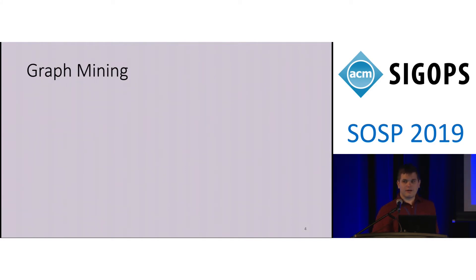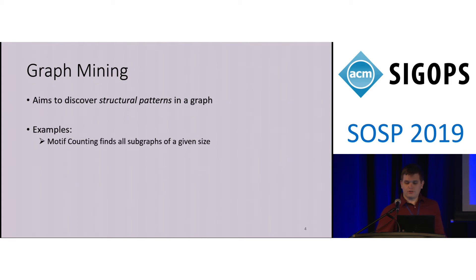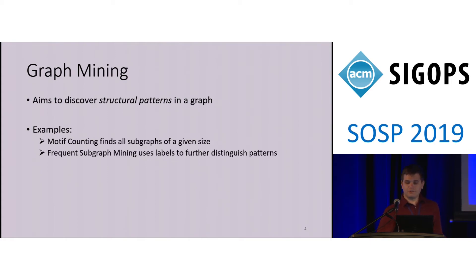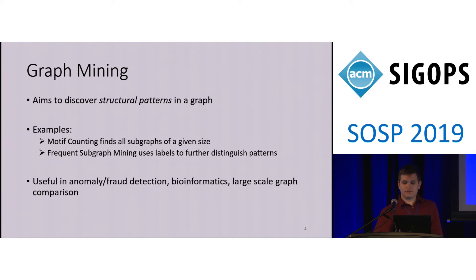So let's talk about graph mining specifically. Unlike graph traversals, graph mining searches for structural patterns within graph data sets. Two of the most common expressions of this problem are motif counting, which finds all patterns of a particular size, and frequent subgraph mining, which takes it a step further and separates otherwise identical patterns according to labels on their vertices or edges. Graph mining finds uses in activity networks for anomaly and fraud detection, protein interaction networks for bioinformatics, and as a fingerprinting tool for comparison between huge graph data sets.